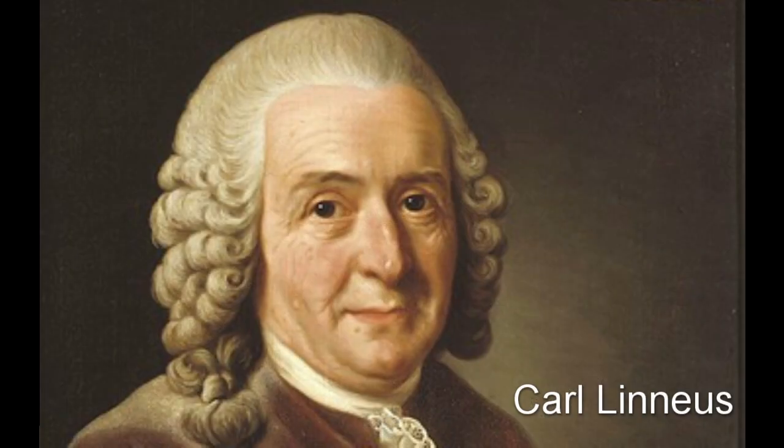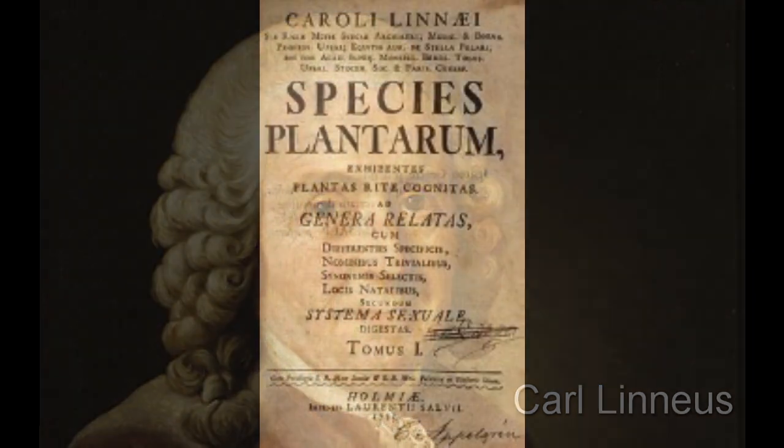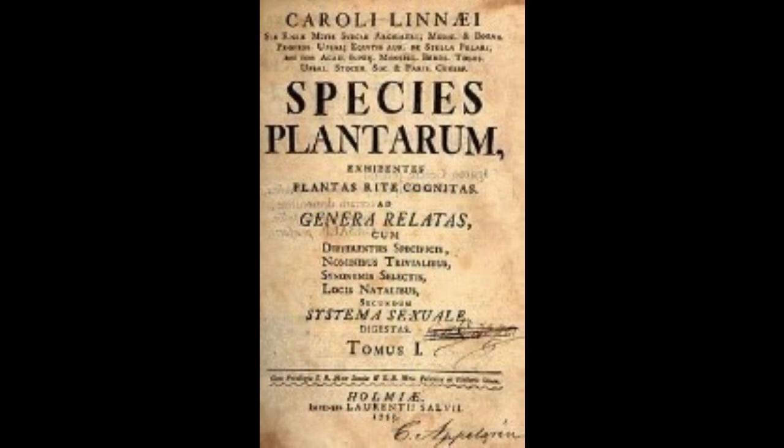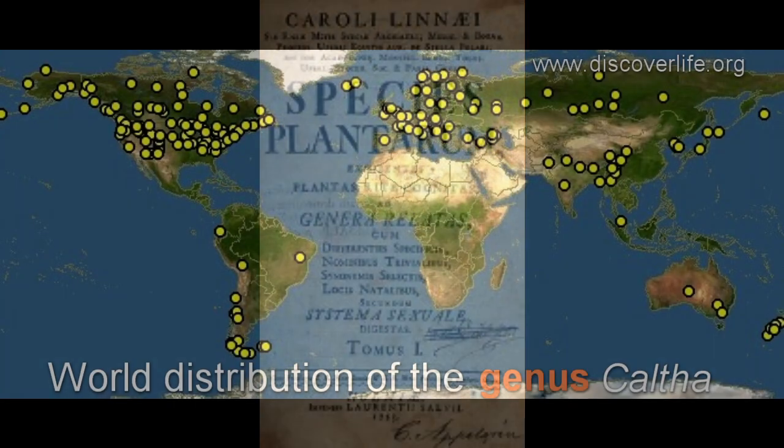In 1737, Carl Linnaeus described this plant again in his book Genera Plantarum. It officially became recognized under its current scientific name Caltha palustris when it was finally given its binomial name in Carl Linnaeus' 1753 book Species Plantarum.